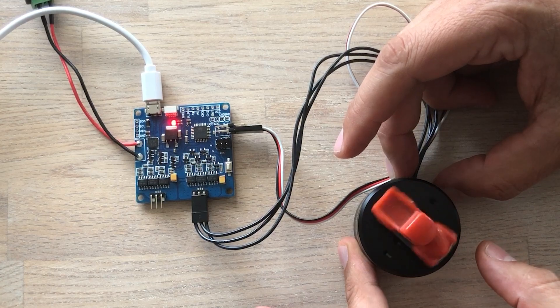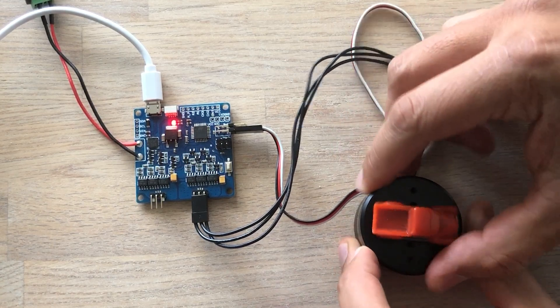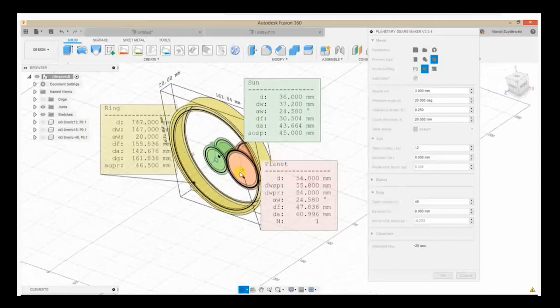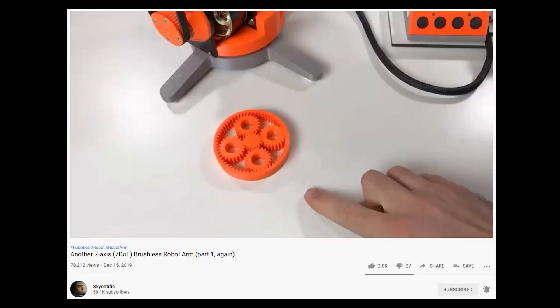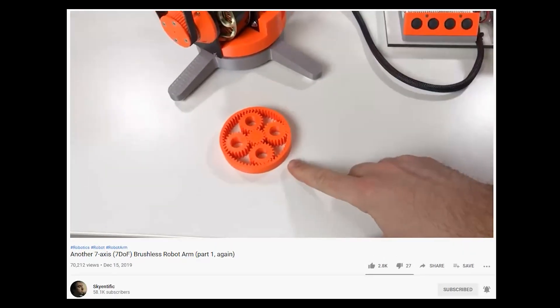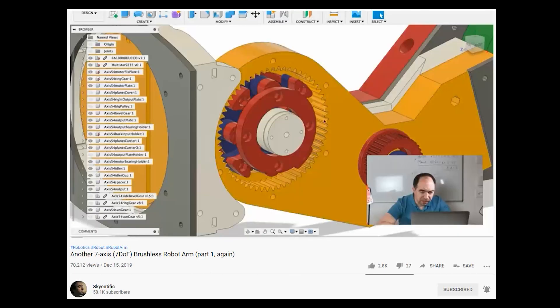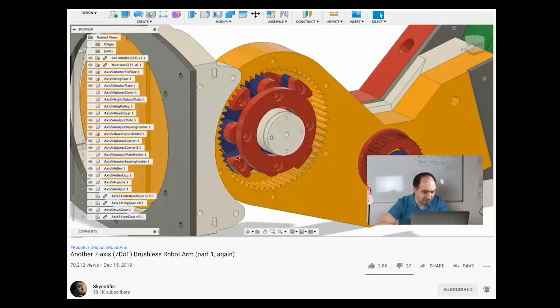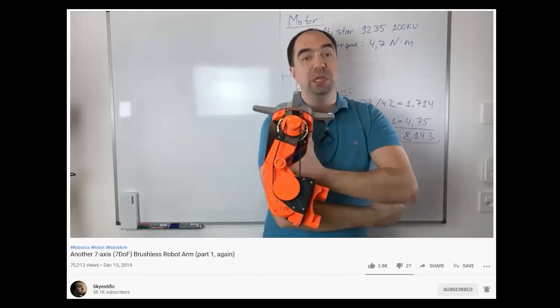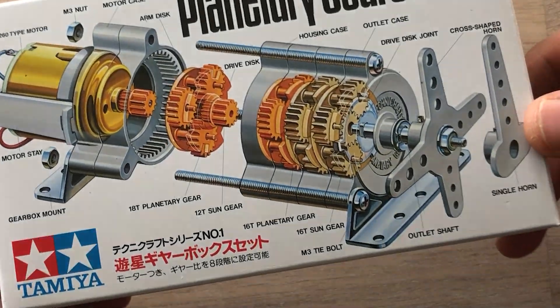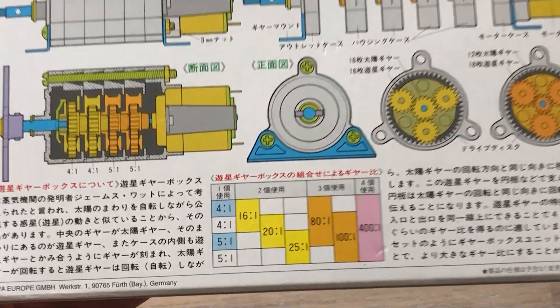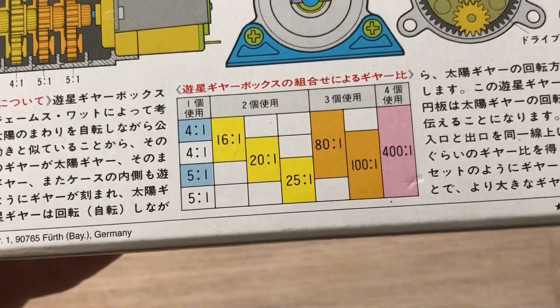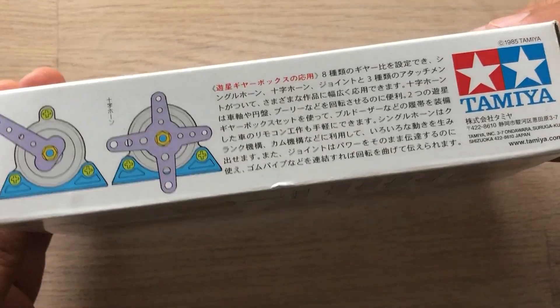For some joints, you will need a compact gearbox, which you can design in Fusion 360 using the Helical Gear Generator add-in and then print it in 3D. Like our friend from Skyentific, who took the challenge of making a powerful robot arm using brushless motors and 3D printing the whole structure. You may also use something off the shelf, like this Tamiya planetary gearbox set, which offers 8 different reduction ratios to select from.